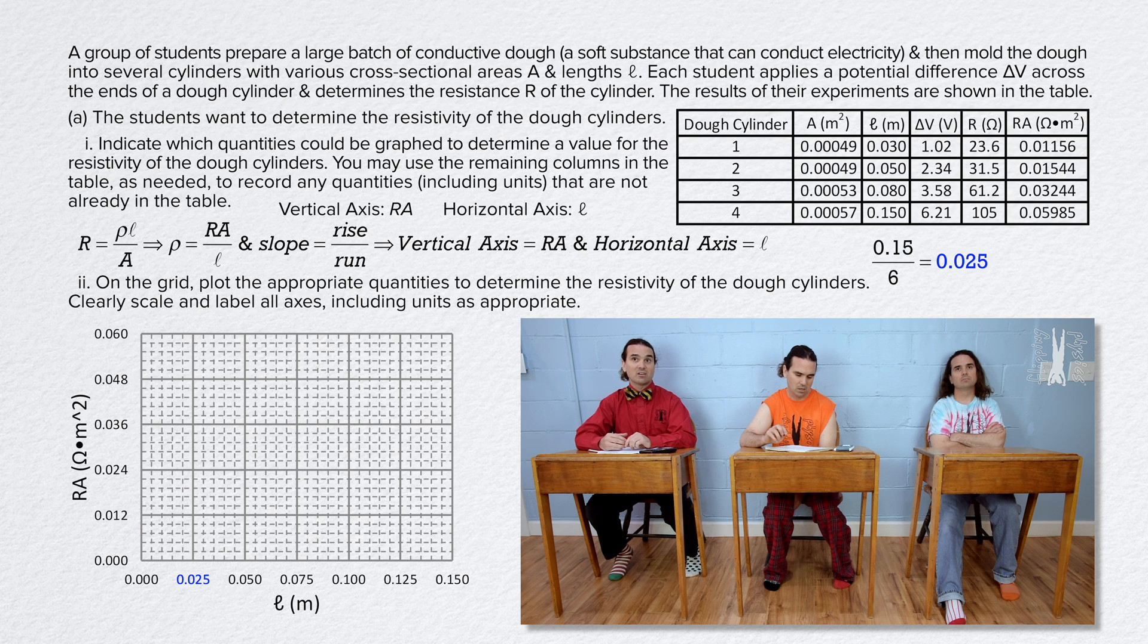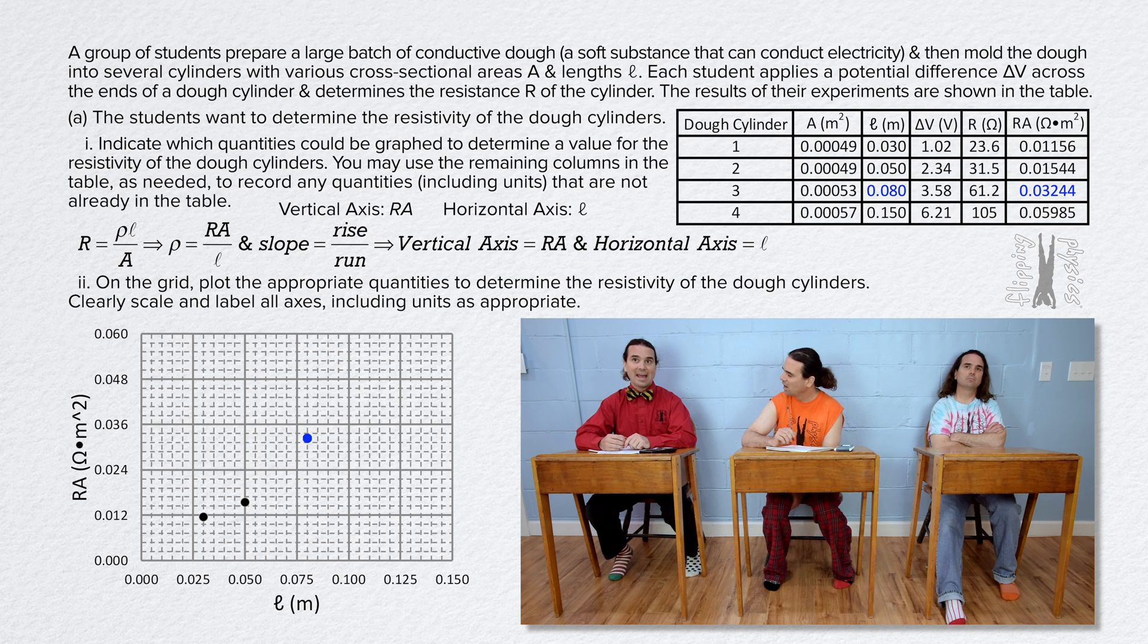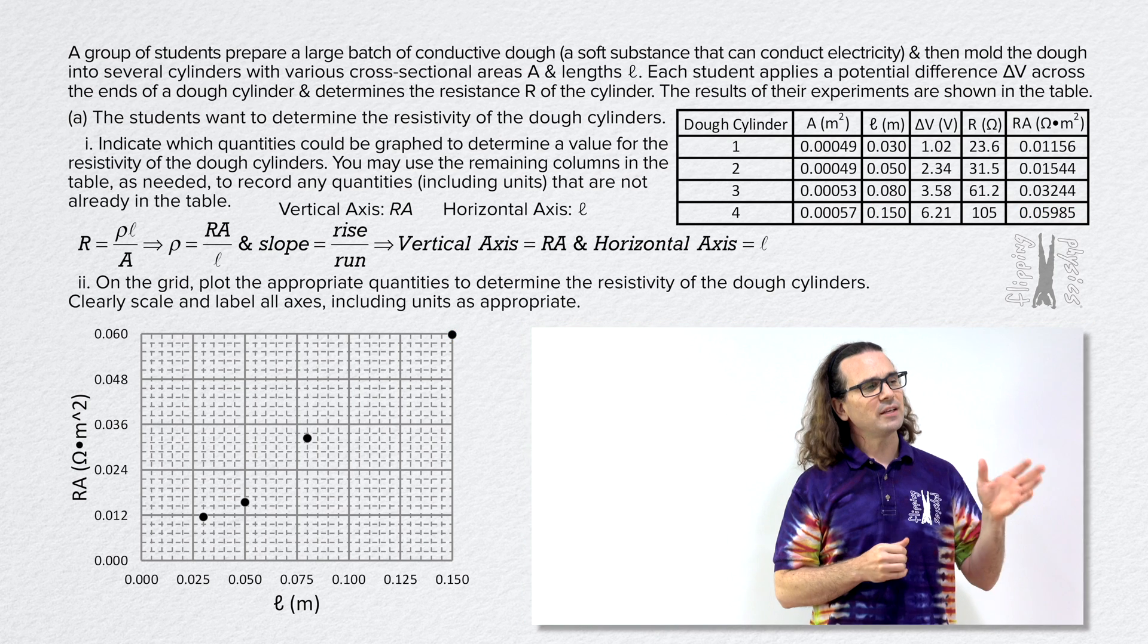The first dough cylinder is at 0.03 along the x-axis and just less than 0.012 along the y-axis. The second dough cylinder is at 0.05 along the x-axis and slightly above 0.015 along the y-axis. The third dough cylinder is at 0.08 along the x-axis and roughly 0.032 along the y-axis. The fourth dough cylinder is at 0.15 along the x-axis and roughly 0.06 along the y-axis. And that is it for plotting the graph. Thanks Billy.